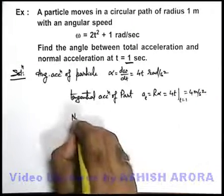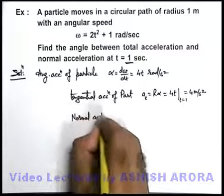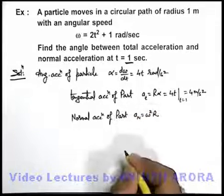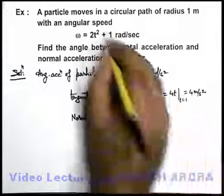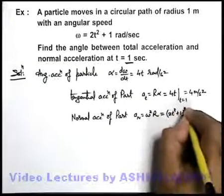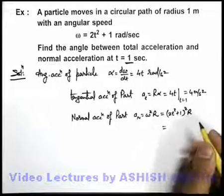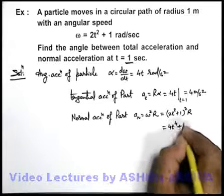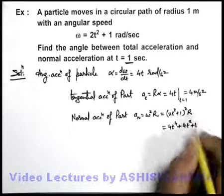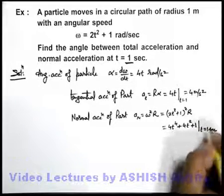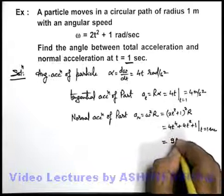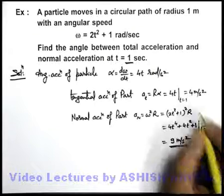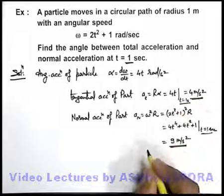In parallel, we can also calculate the normal acceleration. Normal acceleration of the particle is given as omega squared times r. Substituting omega equals 2t squared plus 1, and r equals 1, we get 4t to the power 4 plus 4t squared plus 1. Calculating at t equals 1 second, we get 4 plus 4 plus 1, which equals 9 meter per second squared.